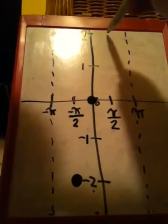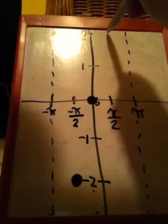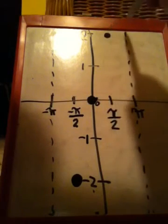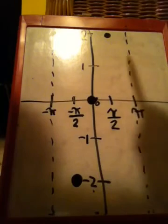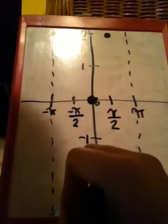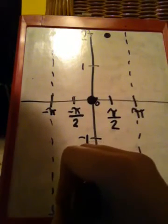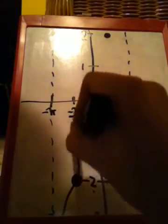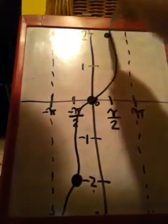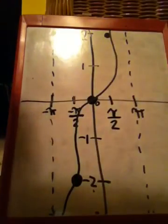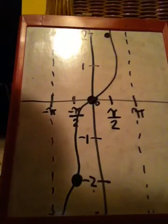And then our other positive a absolute value, and then our asymptote. Now, with this, we're going to get a funky curve. And there is your tangent graph, y equals 2 times the tangent of x over 2.